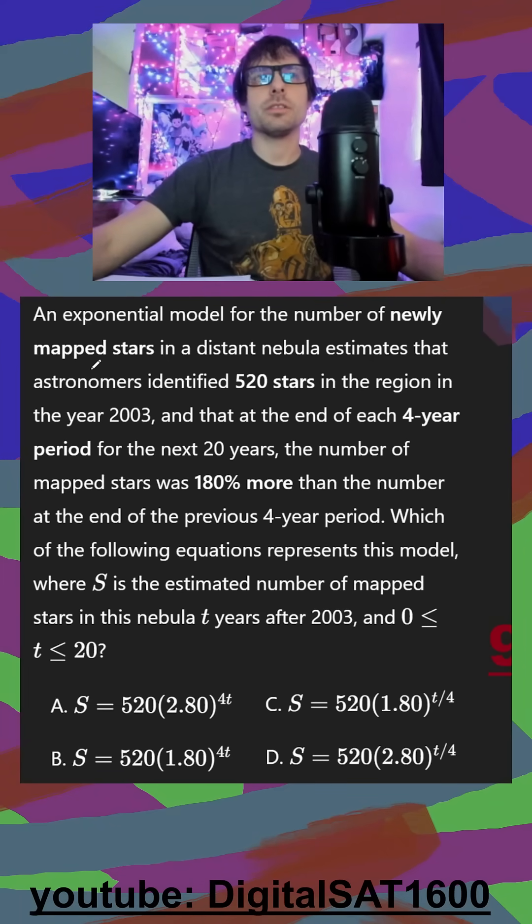An exponential model for the number of newly mapped stars in a distant nebula estimates that astronomers identified 520 stars in 2003. Sounds like an initial.